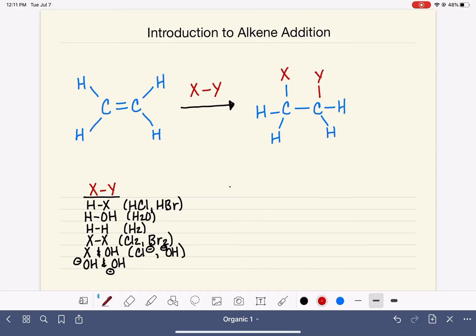While it's always an addition reaction, when we add HCl or HBr, we call it specifically hydrohalogenation—hydro for the H and halogenation for the Cl or Br. When we add water, we call it a hydration reaction. When we add the H2 molecule, we call this hydrogenation. And when we add a halogen molecule like Cl2 or Br2, we call this halogenation.